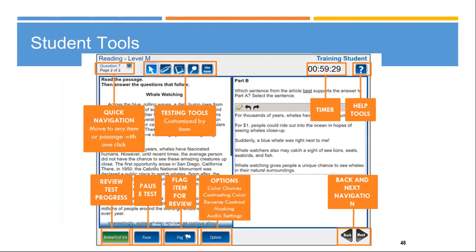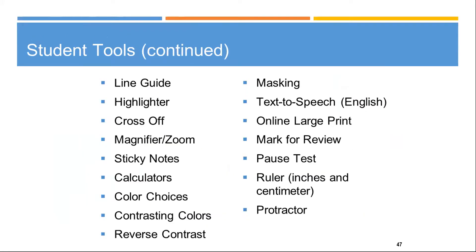Online testing tools are customized by item type — for math items, a calculator pops up. Students can review test progress, pause the test, flag an item, and choose color options including contrasting color, reverse contrast, and masking. Audio text-to-speech in English is available but requires proof of a disability or accommodation need. Highlighters and line guides help students track their reading progress. Students can also cross off answer choices they know are incorrect.